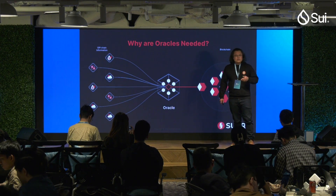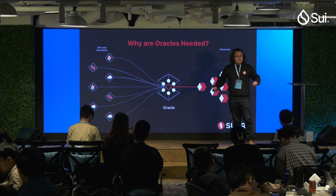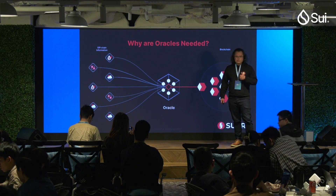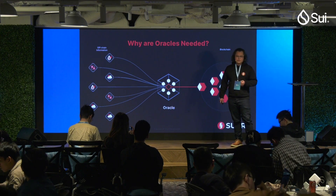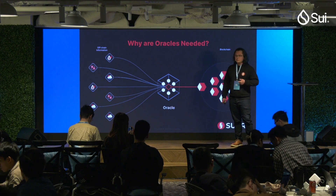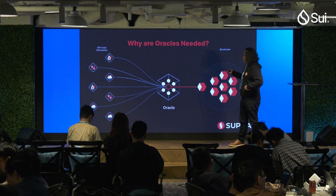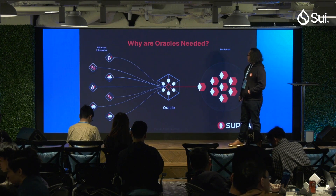If you want to get external data — whether that's price feed data, whether that's cross-chain communication, whether that's on-chain randomness — you need to use oracles to achieve this.